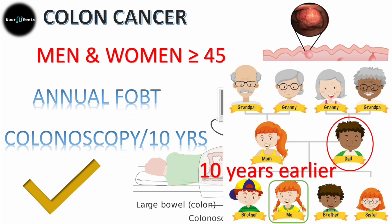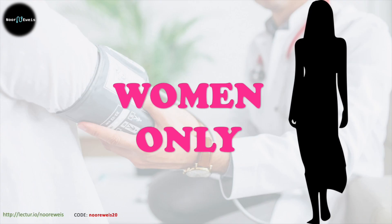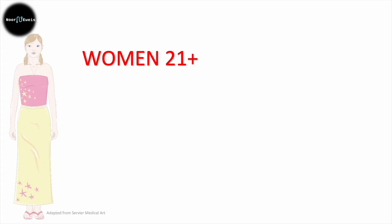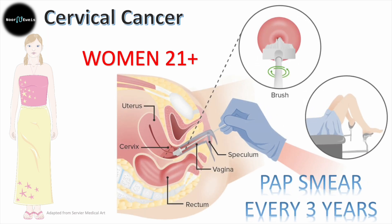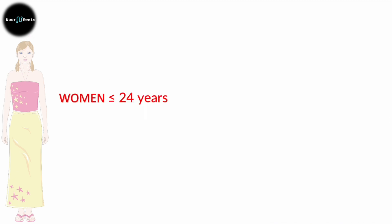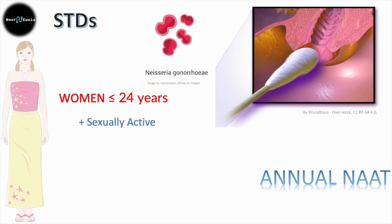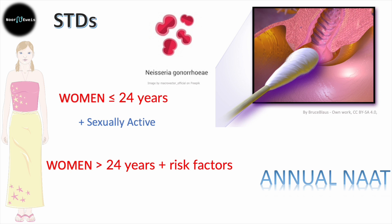Now let's talk about screenings for women only. These relate to the reproductive system — cervical cancer, breast cancer — or anything related to estrogen, like osteoporosis. Women 21 and up are screened for cervical cancer with a pap smear every three years, stopping at 65. If she does co-testing with both pap smear and HPV, she only needs to screen every five years. Women 24 and under who are sexually active must be screened annually for STDs like gonorrhea via vaginal swab PCR. If she's over 24, we don't screen unless she has risk factors like multiple or new partners.